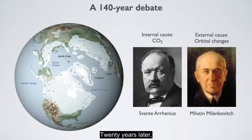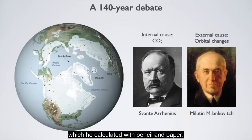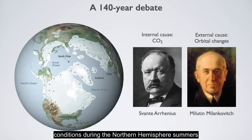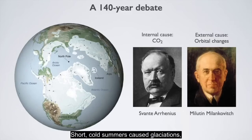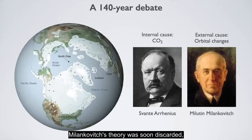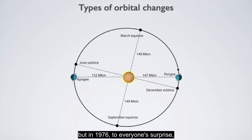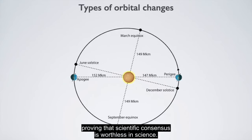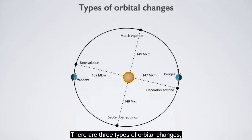Twenty years later, Milutin Milankovic proposed that glaciations were due to changes in the orbit, which he calculated with pencil and paper. For Milankovic, conditions during the northern hemisphere summers were important: short, cold summers caused glaciations and long, warm summers caused interglacials. Milankovic's theory was soon discarded, but in 1976, to everyone's surprise, it was discovered that glaciations did indeed follow Milankovic's orbital frequencies, proving that scientific consensus is worthless in science.